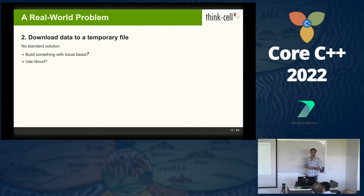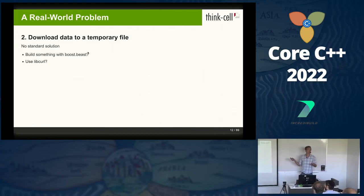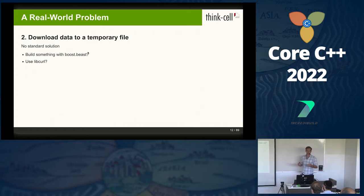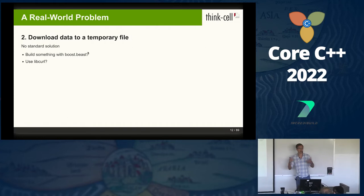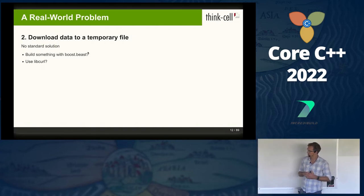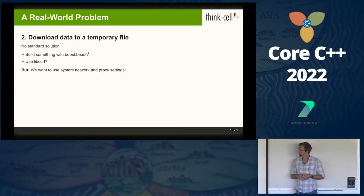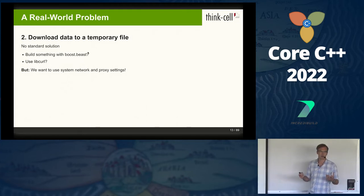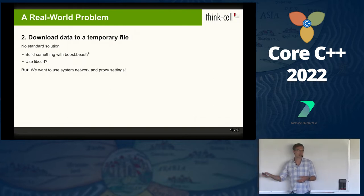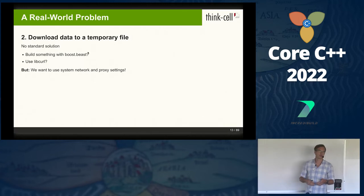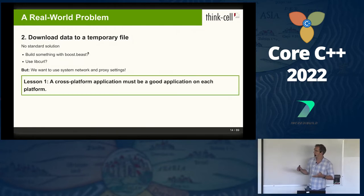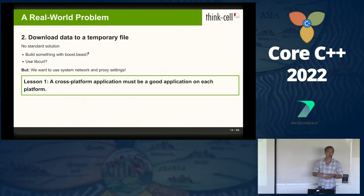For the second step, we want to download the data to the temporary file. Here we don't have a standard solution yet. We could build something on top of Boost.Beast, which has an HTTP implementation, but that might be too low-level. We could use libcurl — it's widely supported, super stable, and a lot of things are built on it. But we want to use the system network and proxy settings on each platform. We're running in a business environment; maybe the system administrator has specified them in system settings, or our resource is only accessible through the company proxy. And it turns out libcurl doesn't do that. This brings us to the first lesson: we're writing a cross-platform application, but we want it to be a good application on each operating system.